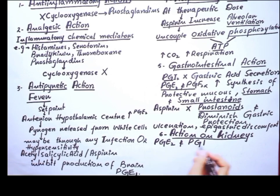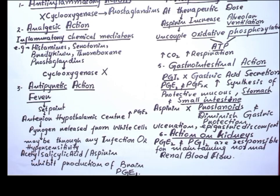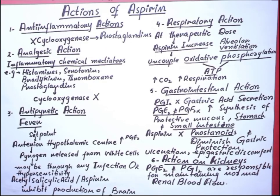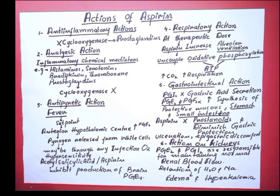Prostaglandin E2 and prostaglandin I2 are responsible for maintaining normal renal blood flow. When we take aspirin, it inhibits prostaglandin E2 and prostaglandin I2, which causes edema and hyperkalemia. This covers the functions of aspirin on our different body systems. Please like this video, share it with your friends, and subscribe to the channel — Learn Science With Me.